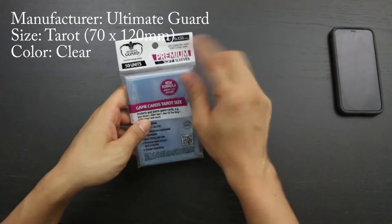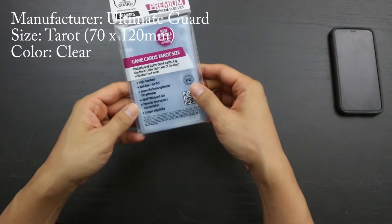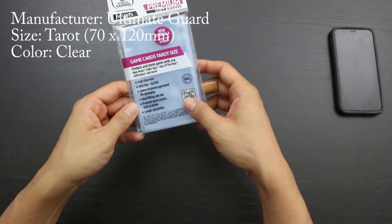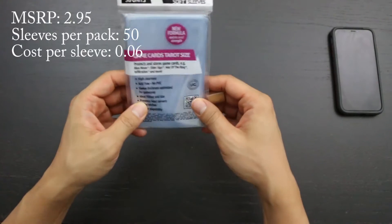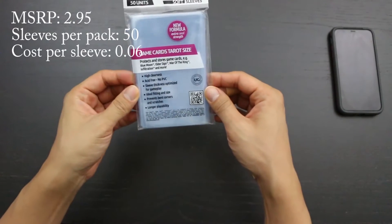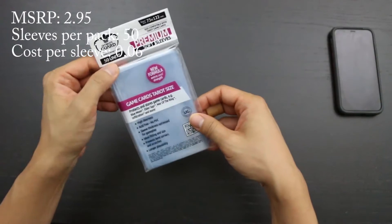These sleeves are 73 by 122mm, and they are clear. You can buy one package of these at an MSRP of $2.95 per pack, and for that you get 50 sleeves.